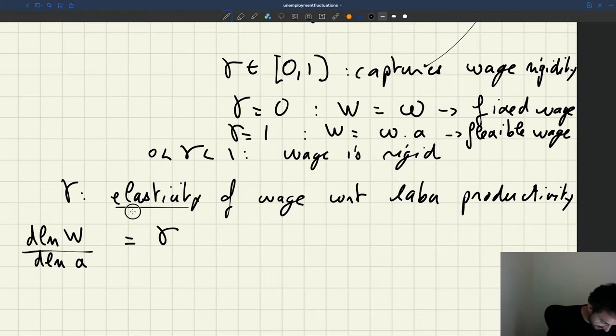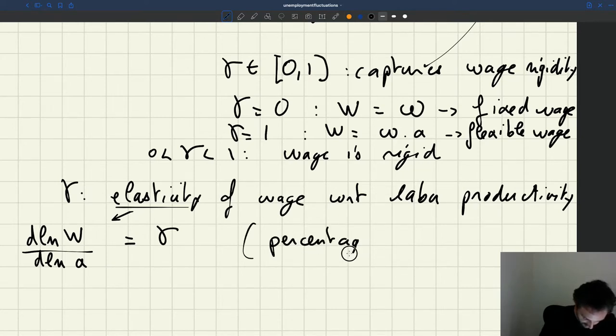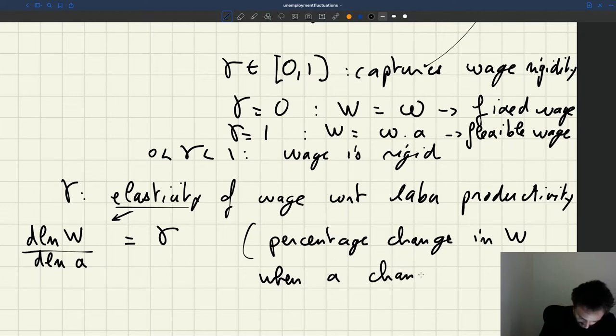An elasticity is the derivative of the log of a function with respect to the log of the argument. So it's telling you the percentage change. Gamma is giving you the percentage change in the wage when productivity changes by 1 percent. So that's why it's an elasticity.